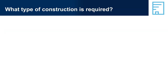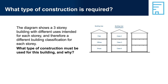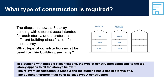What type of construction is required? The diagram shows a three-storey building with different uses intended for each storey, and therefore a different building classification for each storey. In a building with multiple classifications, the type of construction applicable to the top storey applies to all the storeys below it — this does not apply if the top floor is a Class 4 part of a building. The top storey is Class 2, therefore this class applies to the whole building for the purposes of determining the required type of construction. The rise in stories is 3, so the building must be of at least Type A construction. Refer to Table C2D2.